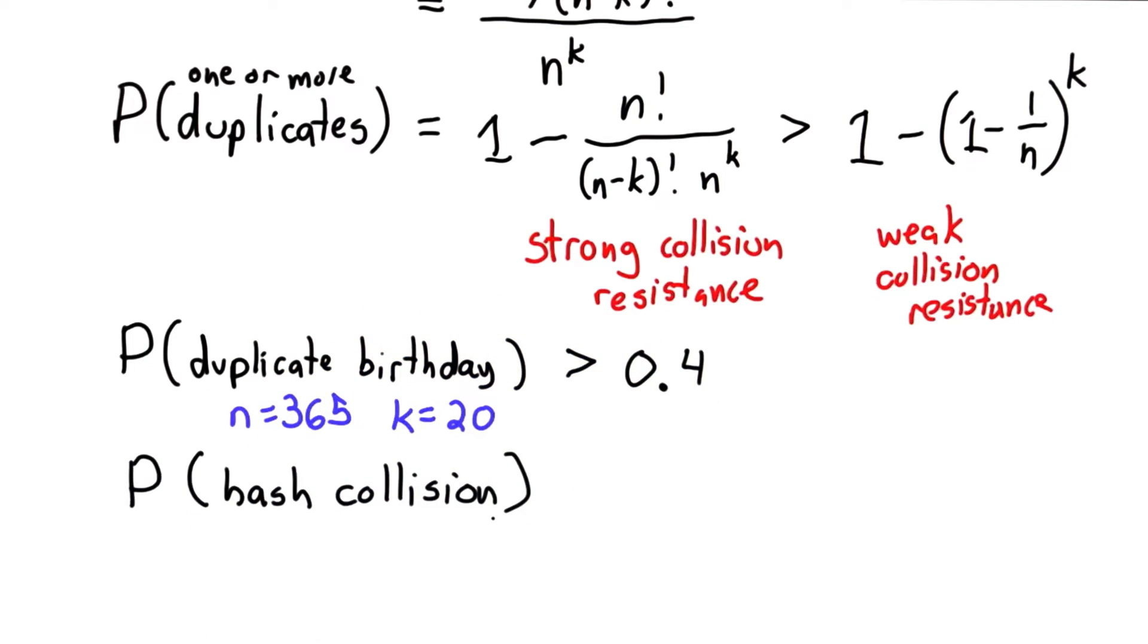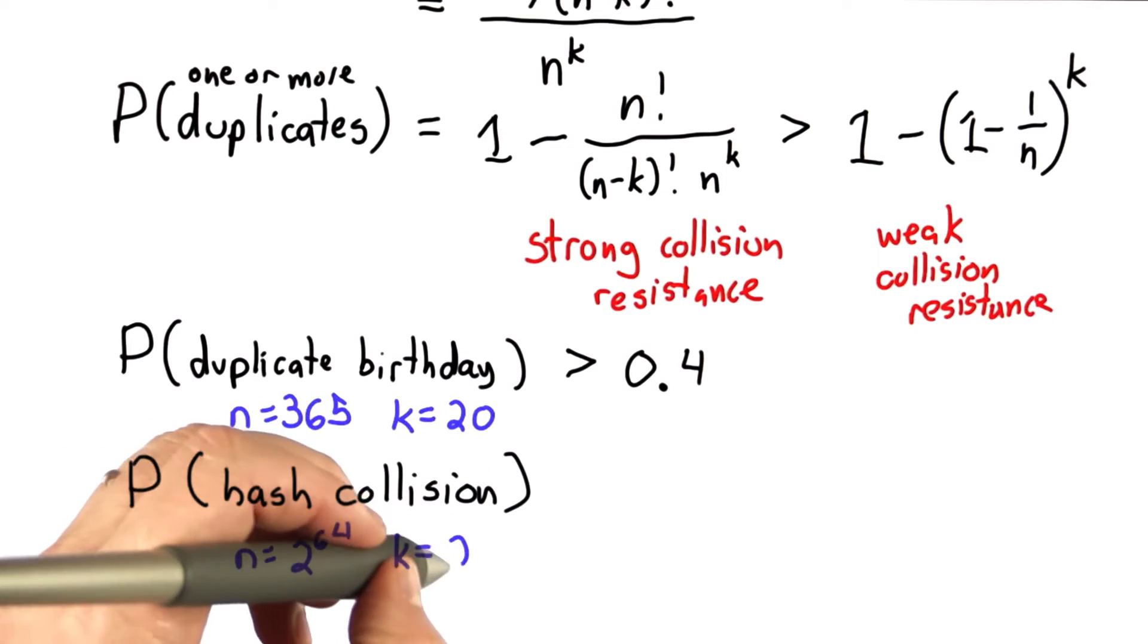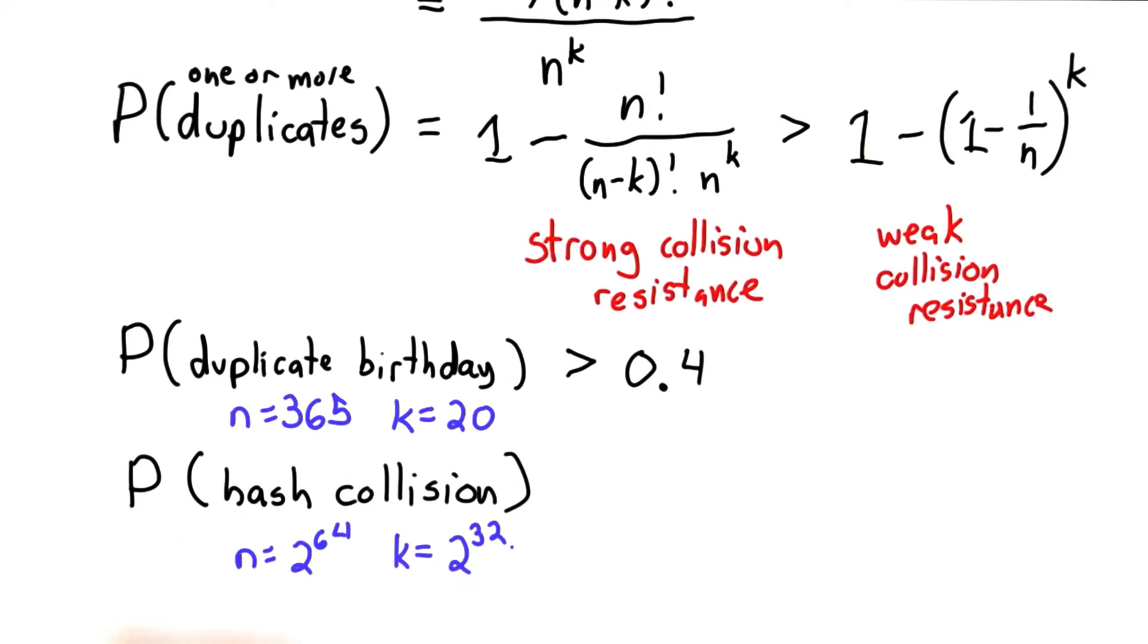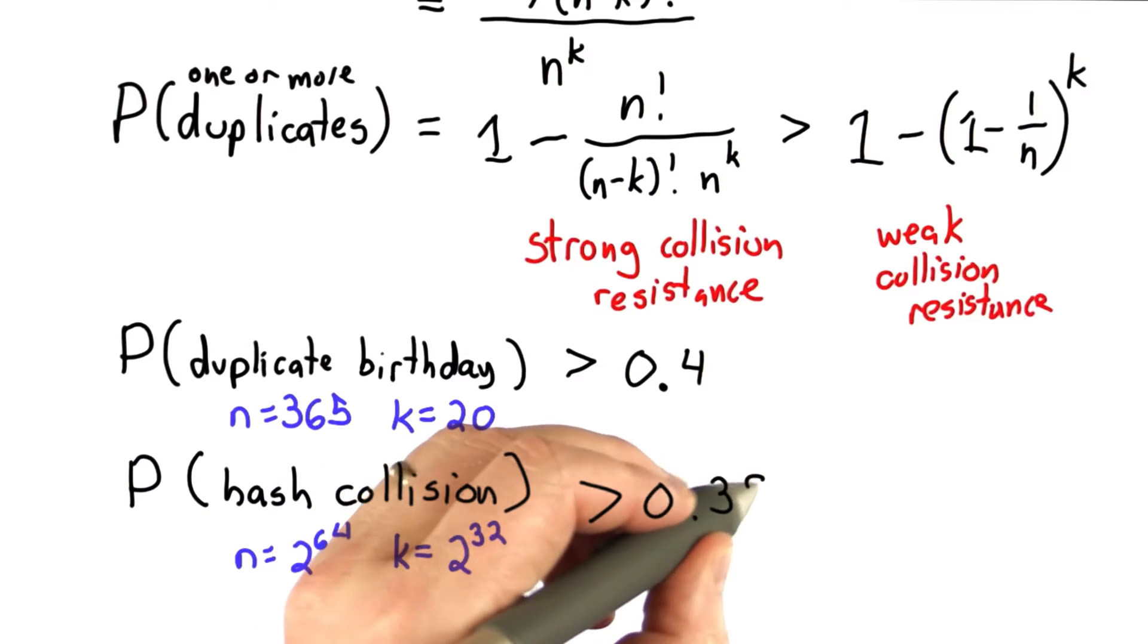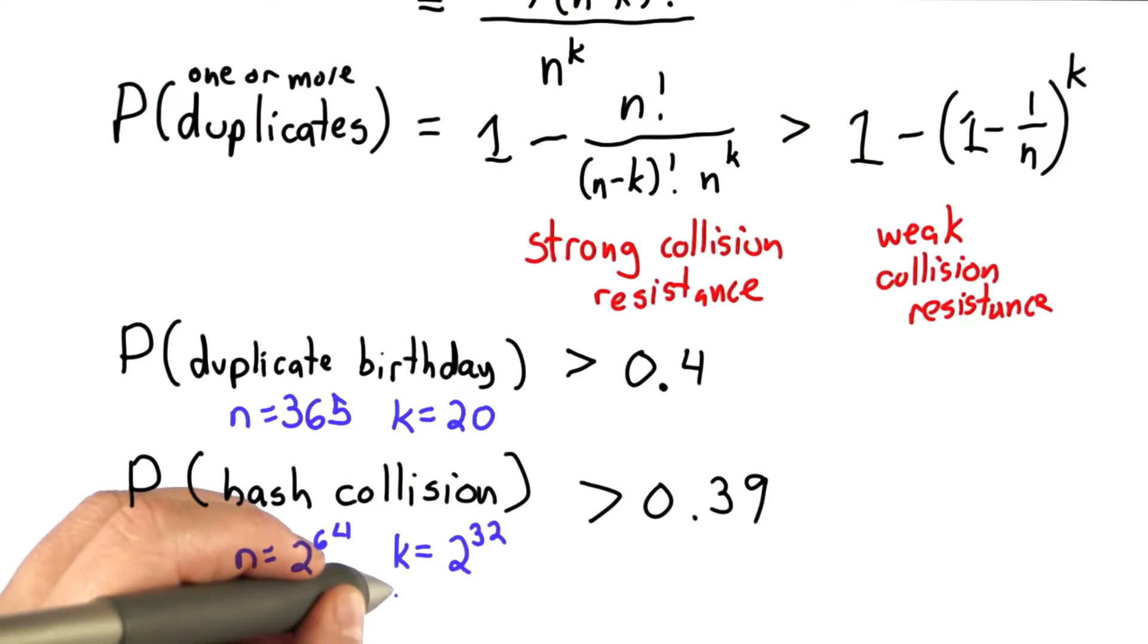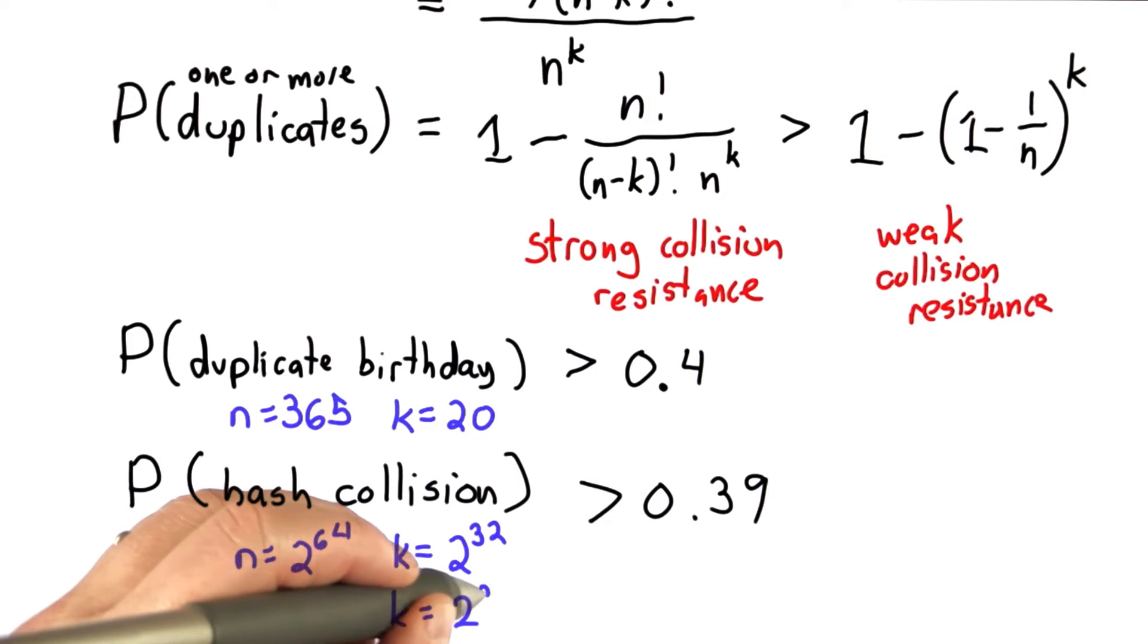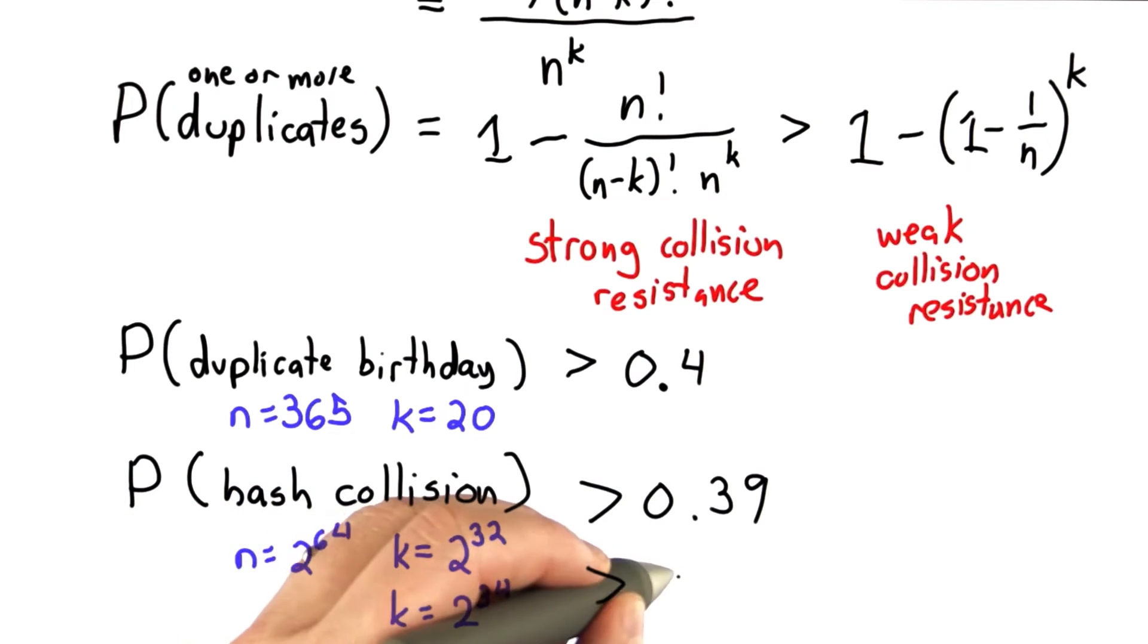If we're thinking about hash collisions, if we only had a 64-bit hash, and our attacker was much weaker than the one we hypothesized, let's say they can only do 2 to 32, that's already almost a 40% chance of success. This success goes up quite quickly. If the attacker can do 2 to the 34 hashes, then the success probability is very close to 1.